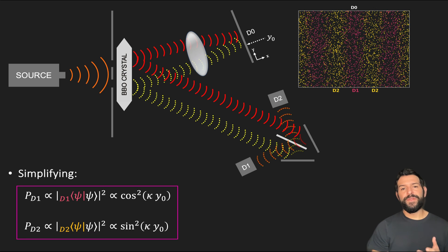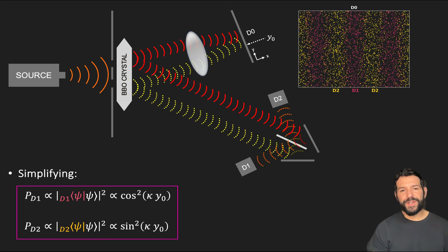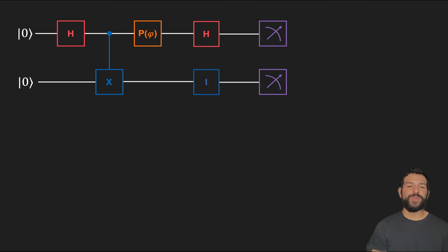Now, I understand this overview of the mathematics was a bit rushed, but the idea is to see that quantum mechanics perfectly predicts the outcome of this experiment without having to call for backwards-in-time communication. So in the next video, we will show how we can map the delayed choice quantum eraser onto a very simple quantum circuit, which, as we will see, makes the analysis of this problem significantly more intuitive.